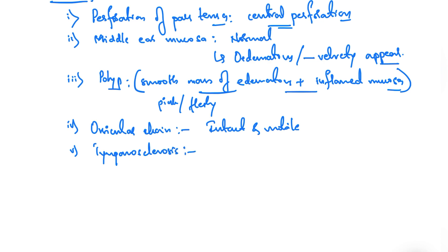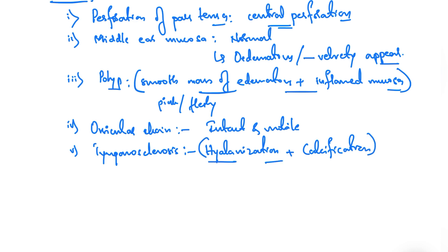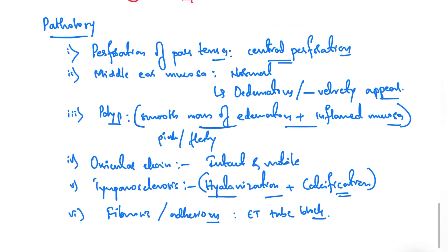We also find tympanosclerosis, where there is hyalinization and calcification of the sub-epithelial connective tissue. This may occur on the promontory, ossicles, joints, tendons, and around the oval and round windows. It can also be associated with fibrosis or adhesions of the ossicular chain to the promontory, or may even block the Eustachian tube.